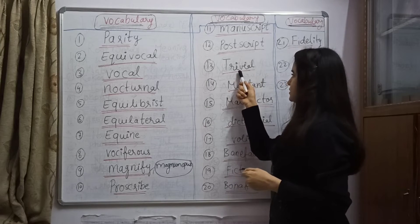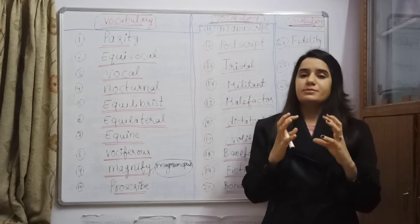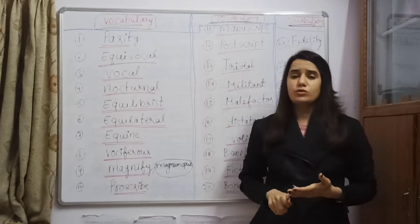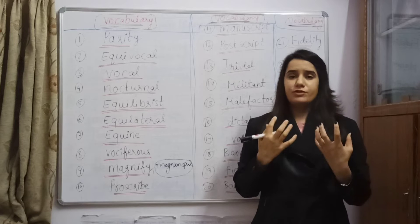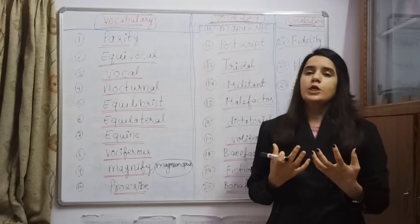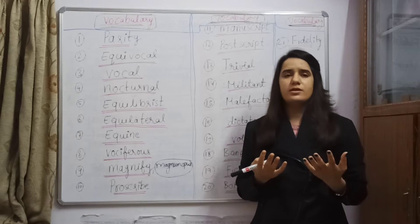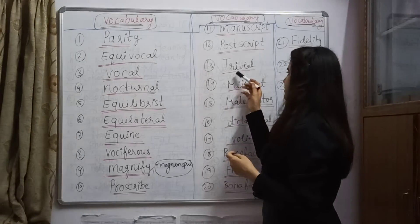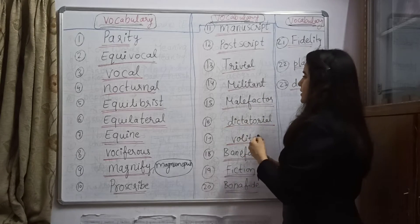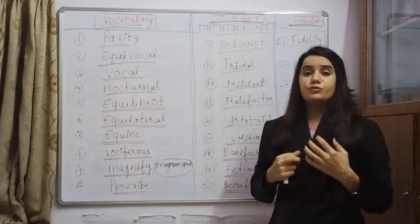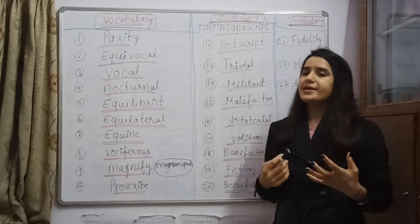Thirteenth is trivial. Tri means three and via means road. When three roads intersect each other, there is a lot of traffic and crowd there, so we cannot share confidential or secretive information in such a place. Therefore, when we give trivial information to someone, it means that information has very less importance — it is a worthless thing. Trivial means less important. Fourteenth is militant — the one who is very aggressive and always fights or works against something.